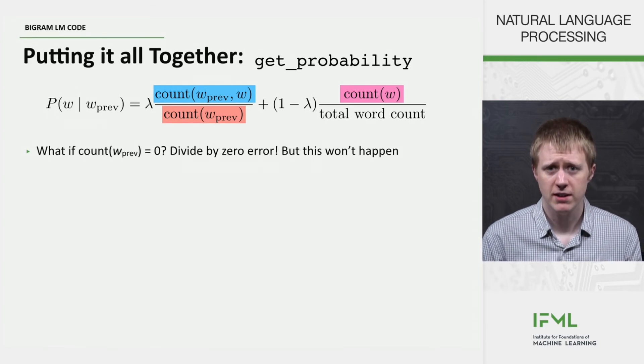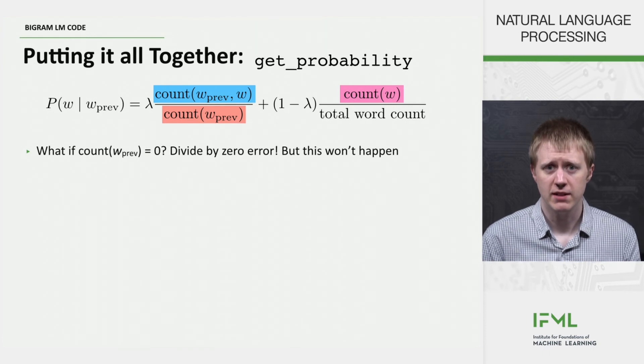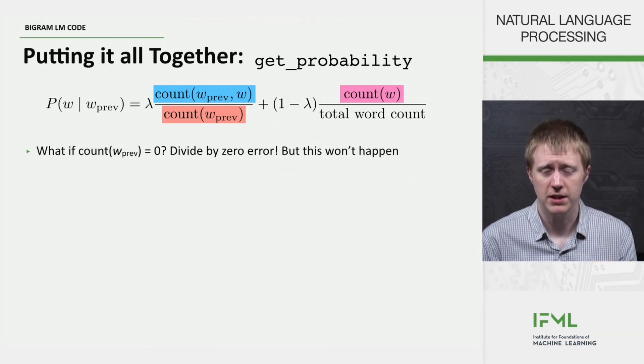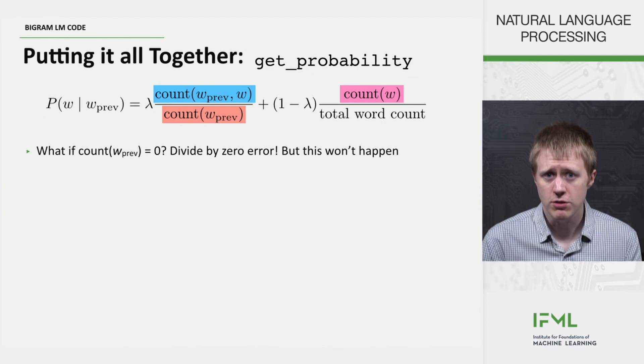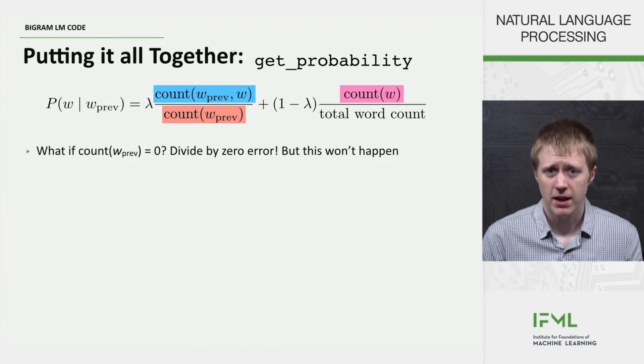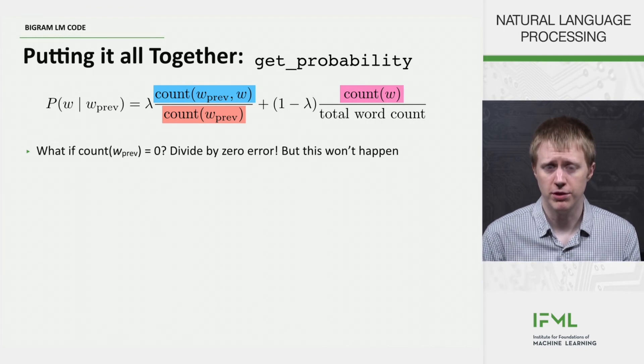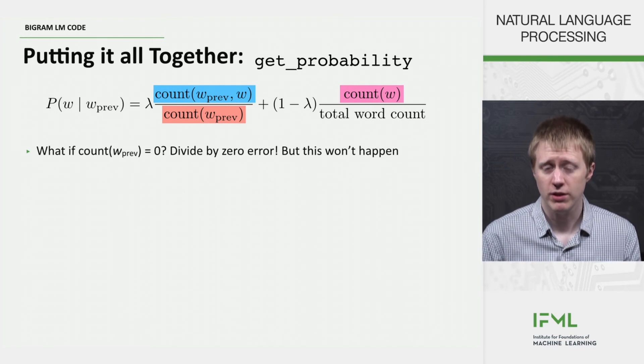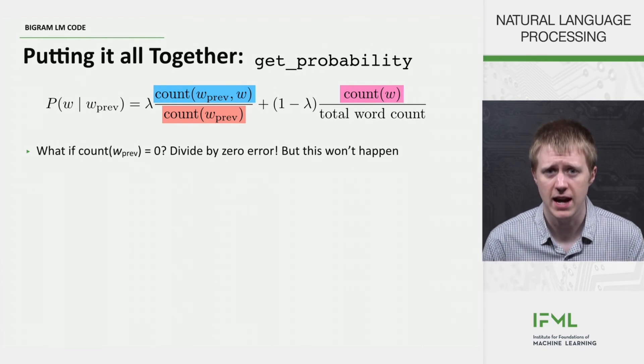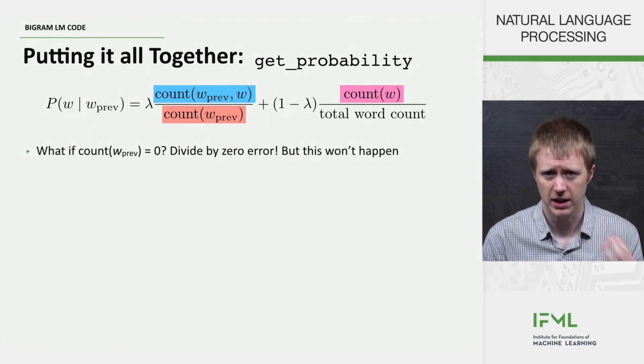So then based on this we can take these counts and plug them into this formula. So we do have to be a little bit careful here. If count of w_prev were ever equal to zero, we would get a divide by zero error. But this isn't going to happen just because we're always, we've got this sort of closed set of words that we're looking at. And all of them are going to have non-zero counts. So that's going to be okay.